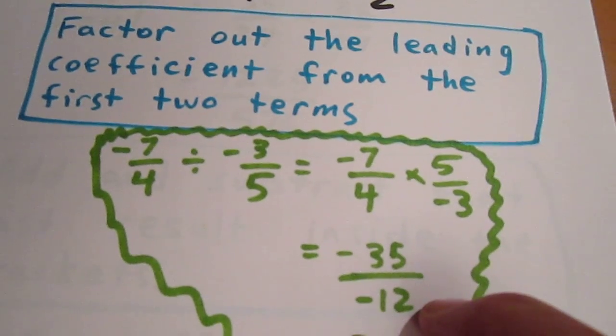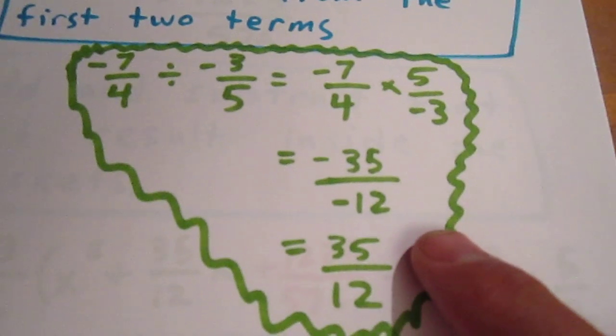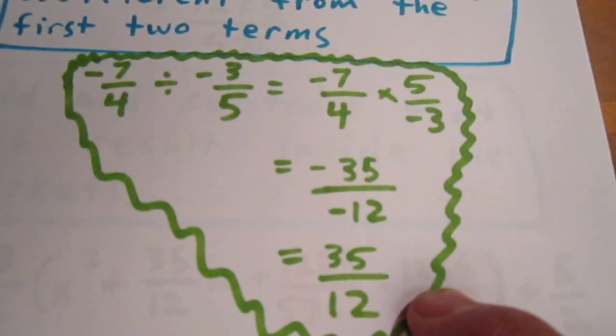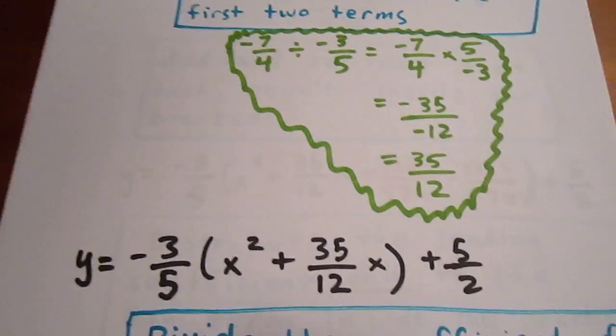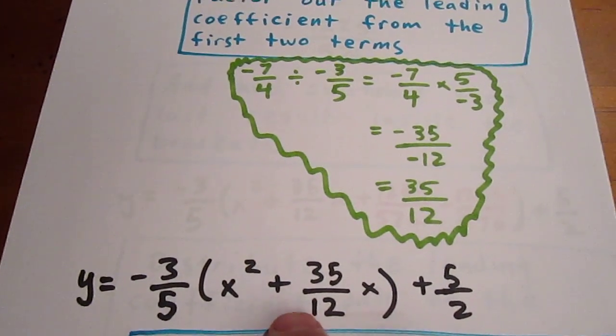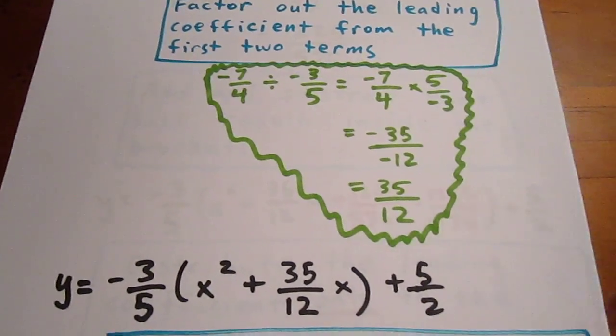Since this is a positive quantity, negative divided by negative, we just make both the numerator and denominator positive. So what we have is negative 3 fifths times x squared plus 35 over 12x plus 5 halves.